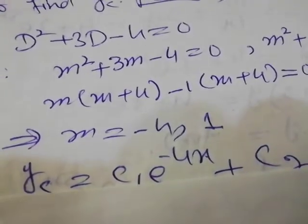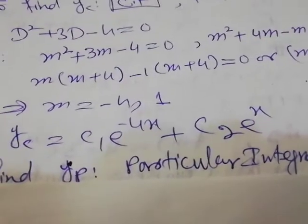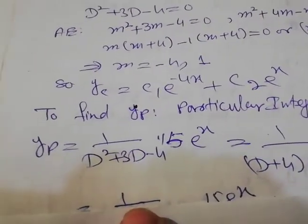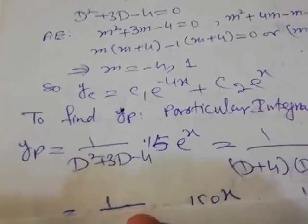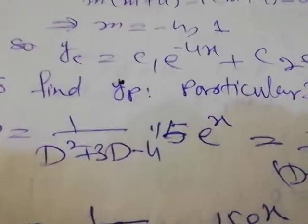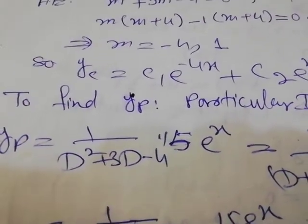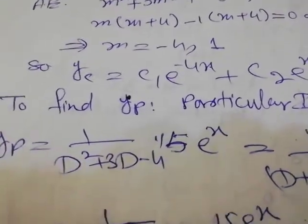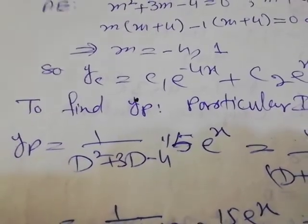The roots of the auxiliary equation are m = −4 and m = 1, so the complementary function is c₁e^(−4x) plus c₂e^x. For the particular integral, we write (1/(D² + 3D − 4)) times 15e^x. Replacing D by 1 gives 1 + 3 − 4 = 0, so this is a failure case.